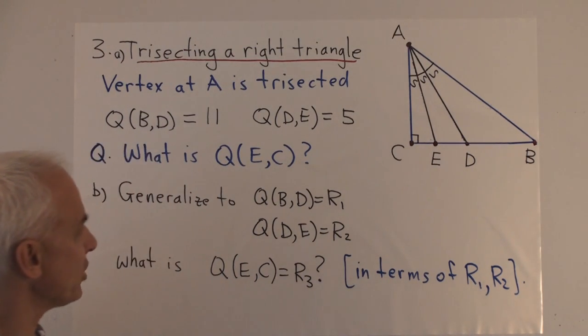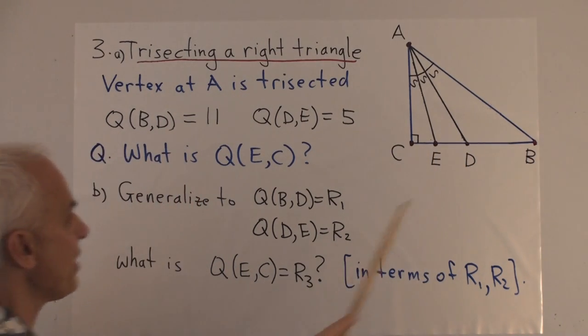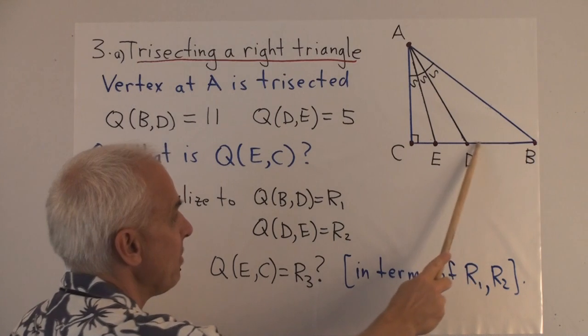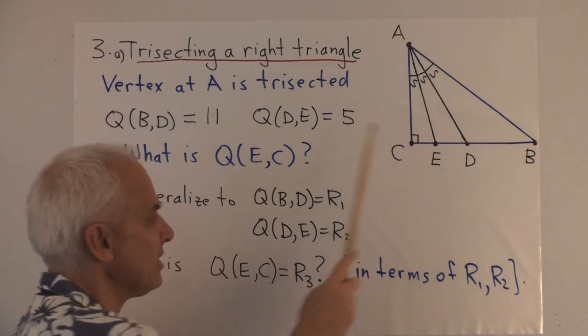And the only thing that we know about this situation is that if these two points down here are called D and E, then we know that the quadrants between B and D is 11, and the quadrants between D and E is 5. And we're interested in what is the quadrants between E and C.